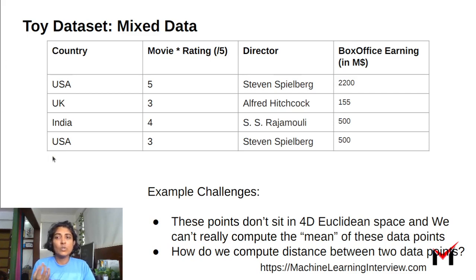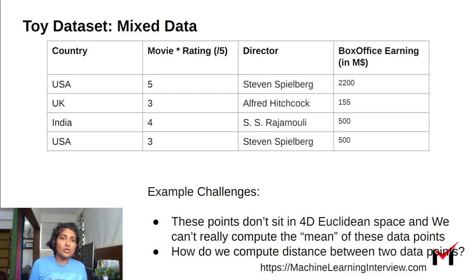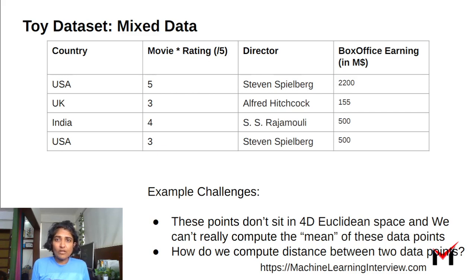We have the country here, which is a categorical variable. And we have the movie rating, which is an ordinal variable — one star, two star, three star, four star, five star. The director is again a categorical variable, taking values Alfred Hitchcock, Steven Spielberg, and SS Rajamouli. And the box office earning is a numeric variable — a subset of real values where you would only have positive values. So this is an example of a mixed data set.